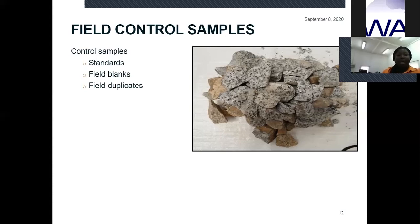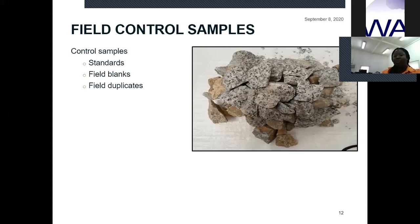Field duplicates are used to check precision, and the results from field duplicates must not be used to fill or pass a batch, as they only tell us how accurate our sampling or sub-sampling protocols are. Poor precision from field duplicate results should only prompt us to go back and look at our sampling protocols and put in corrective measures.